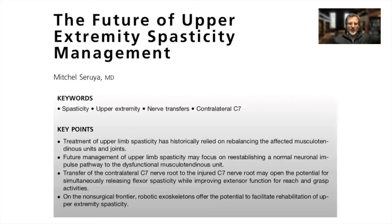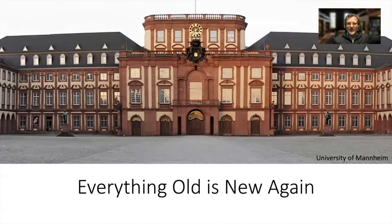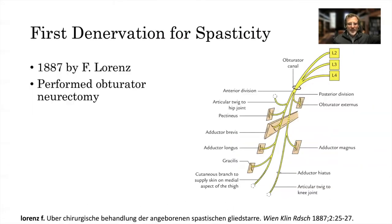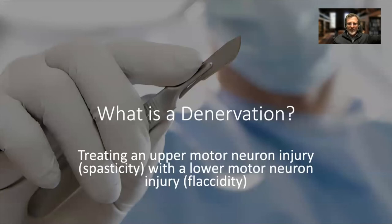Mitch Saruya has done a nice job putting together the latest thinking about what's coming in upper extremity spasticity management, talking about selective de-innervation and nerve transfers. But everything old is new again. The first de-innervation for spasticity was performed in 1887 by Lorenz, where he performed an abductor neurectomy — but it was a complete neurectomy and therefore a complete failure. When you take away an agonist, you unbalance that joint, allowing the antagonist to pull unrestricted. De-innervation treats an upper motor neuron injury — spasticity — with a lower motor neuron injury, which gives you flaccidity, hopefully landing somewhere between a flaccid and a spastic limb. The key is how to balance the amount of de-innervation required.